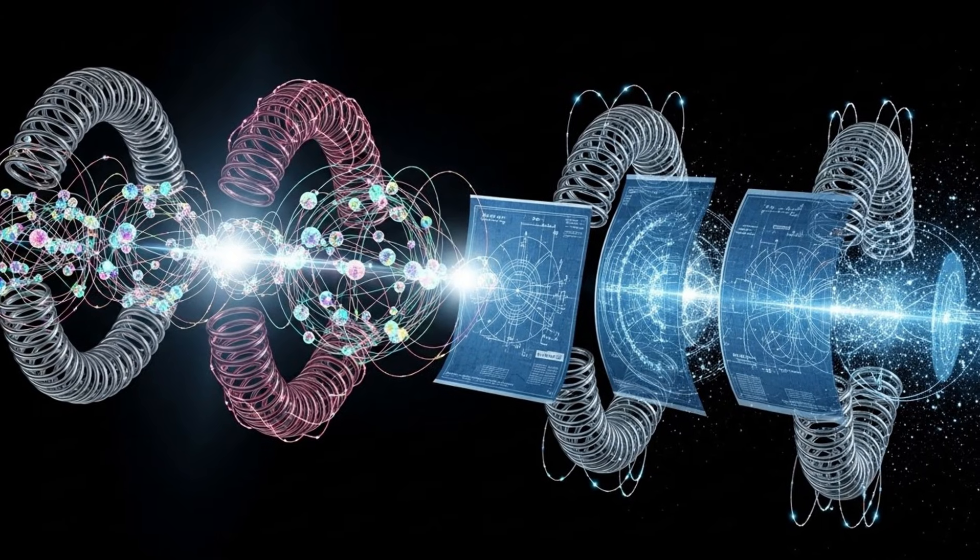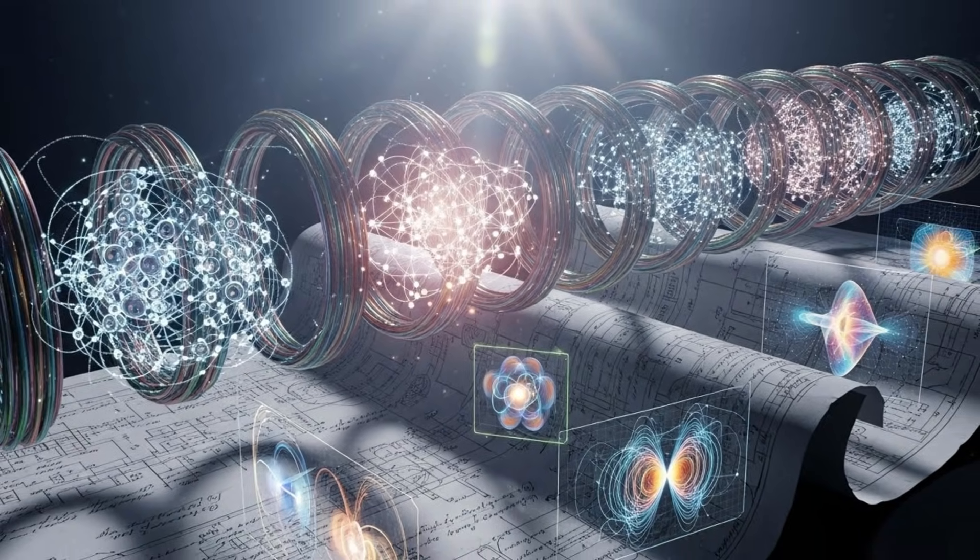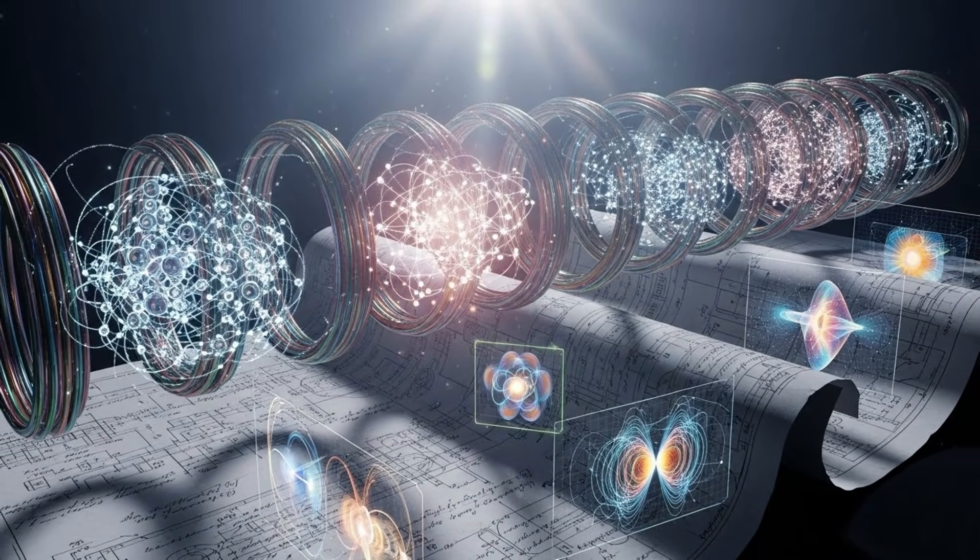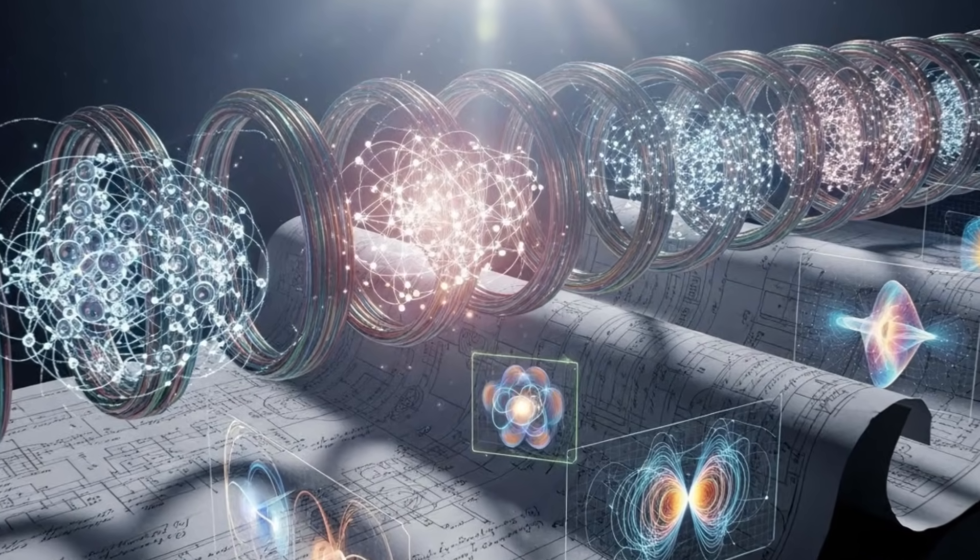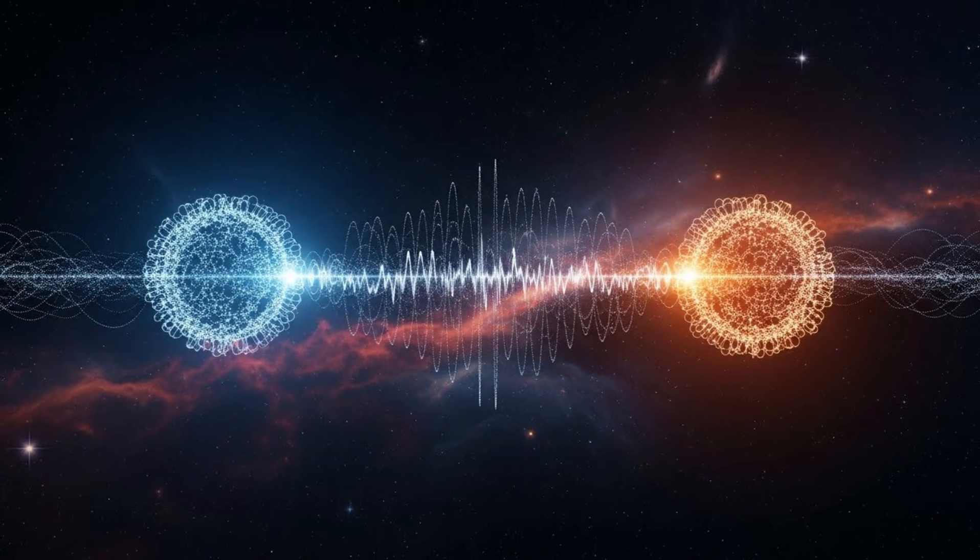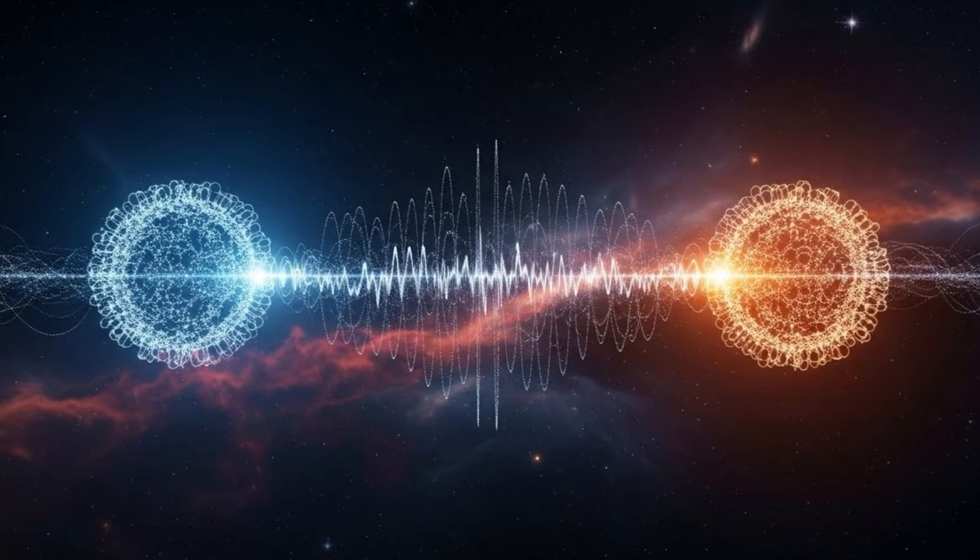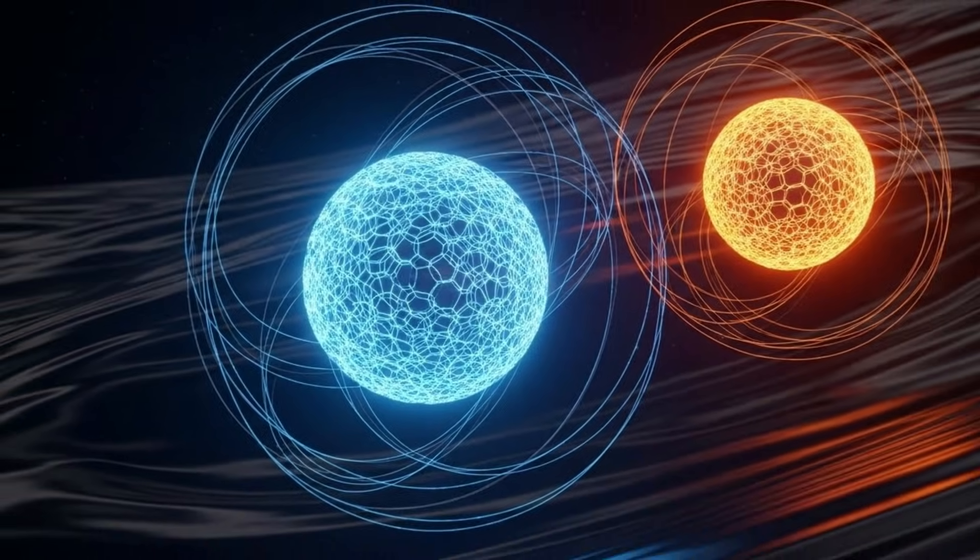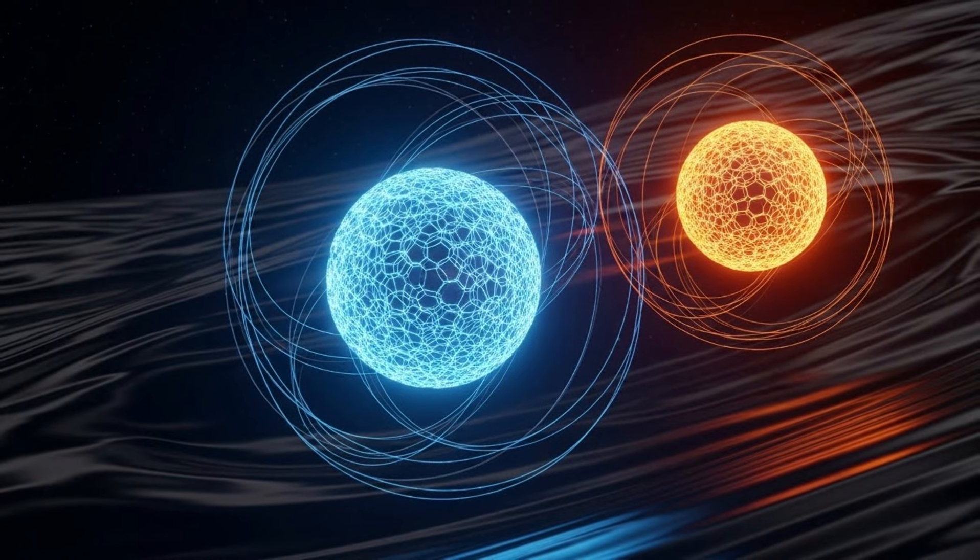Quantum entanglement is one of the most bizarre phenomena in modern physics. When two particles become entangled, they share a quantum state. Meaning that measuring one particle instantly affects the other. No matter how far apart they are. Einstein called it spooky action at a distance. It was first theorized in 1935. Tesla began designing Wardenclyffe in 1901. 34 years earlier.